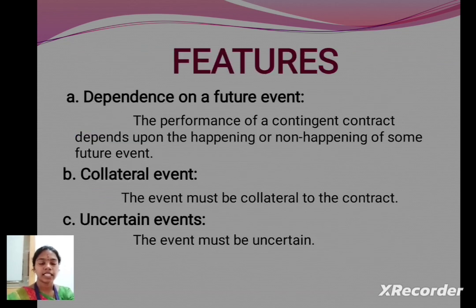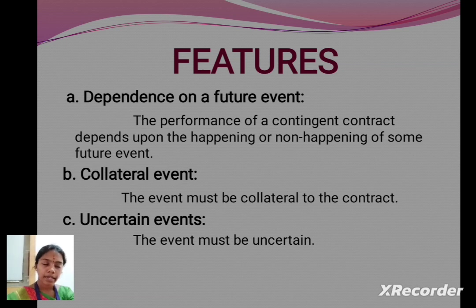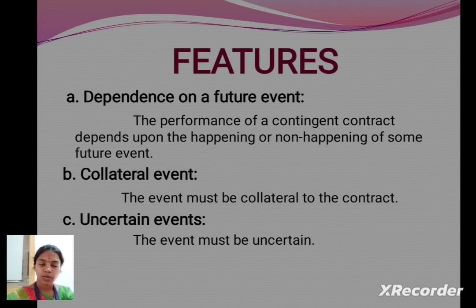Features of contingent contract: First, they are dependent on a future event, which means the performance of a contingent contract depends upon the happening or non-happening of some future event. Second, collateral event, which means the event must be collateral to the contract. Third, uncertain events, which means the event must be uncertain.